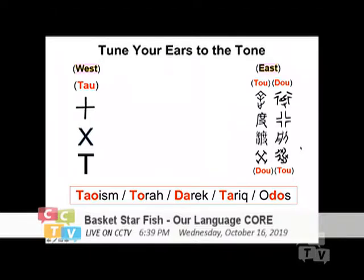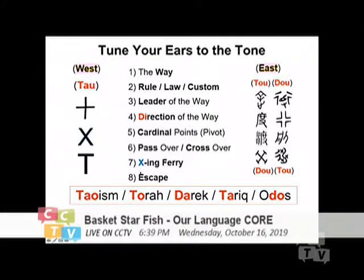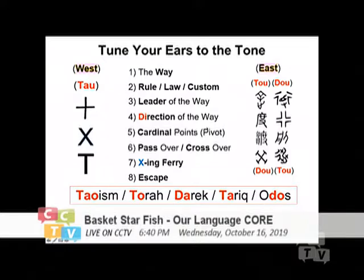If you're Cantonese, you can definitely catch the differences in sound. It will be a little difficult for foreigners. All this meaning can be drawn from that similar sound: the way, which obviously means to rule, the law, the custom, and also means the leader as a noun. It also means the direction, because it's a cross — the pivot and the cardinal point. It means to pass over, to cross over. And also it means escape. So I have already brought you to Taoism, which means the way — and the Torah is also the rule, the law and the way, in Hebrew and in Arabic, and those in Greek.